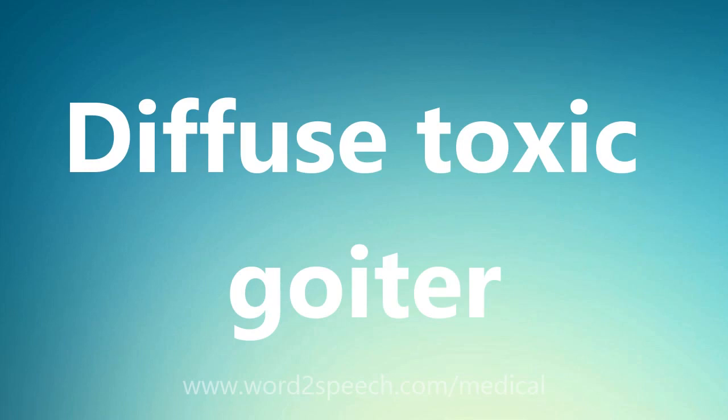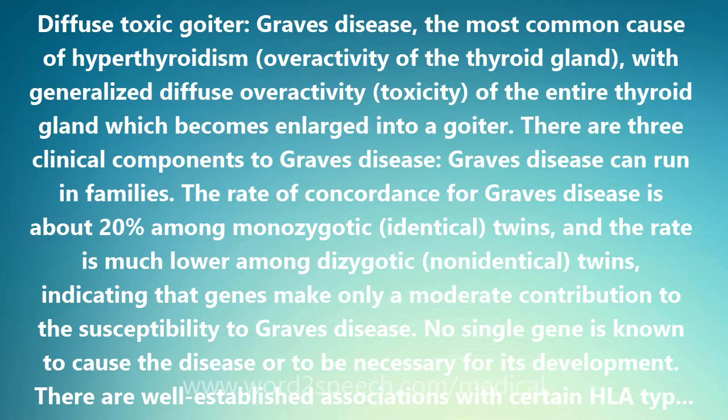Diffuse Toxic Goiter. Graves' disease is the most common cause of hyperthyroidism — overactivity of the thyroid gland — with generalized diffuse overactivity and toxicity of the entire thyroid gland, which becomes enlarged into a goiter.